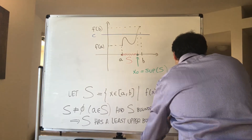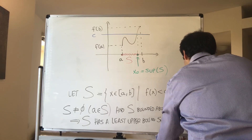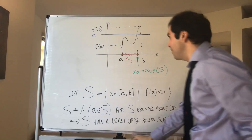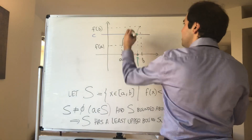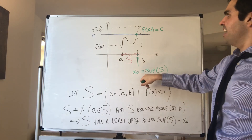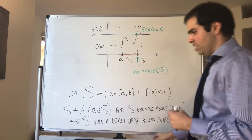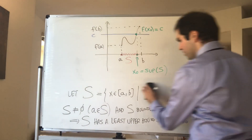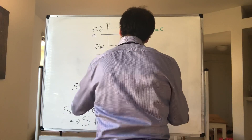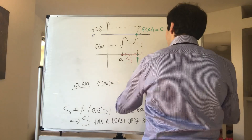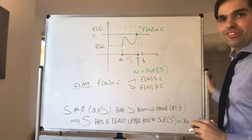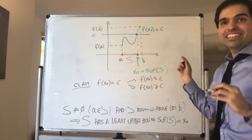So S has a least upper bound, which we call x-naught, the supremum of S. And what do we want to show? We want to show that x-naught solves our problem. In other words, all we need to show is that f of x-naught equals c. So the claim is: f of x-naught equals c, and we'll prove this by showing that f of x-naught is less than or equal to c, and f of x-naught is greater than or equal to c. This is a very beautiful proof.